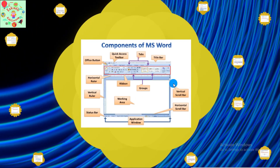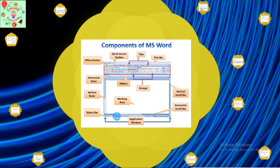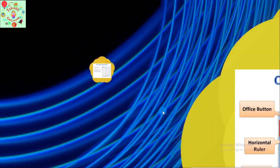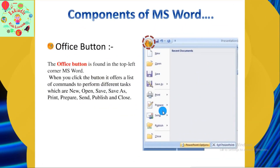Let's take a look at the components of MS Word. We have: Office Button, Quick Access Toolbar, Tabs, Title Bar, Horizontal Ruler, Vertical Ruler, Status Bar, Ribbon, Groups, Working Area, Vertical Scroll Bar, and Horizontal Scroll Bar. Together, this is called the application window.